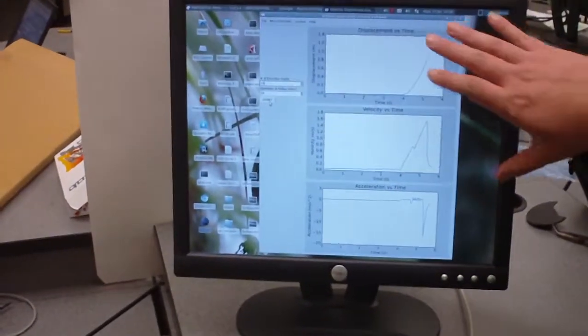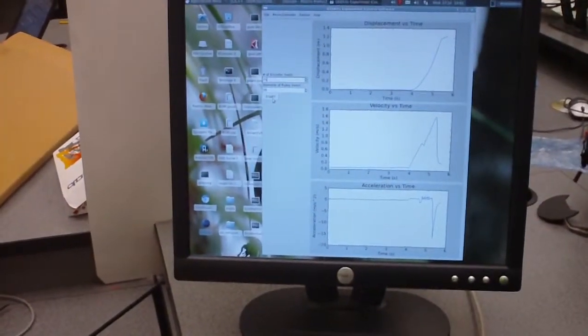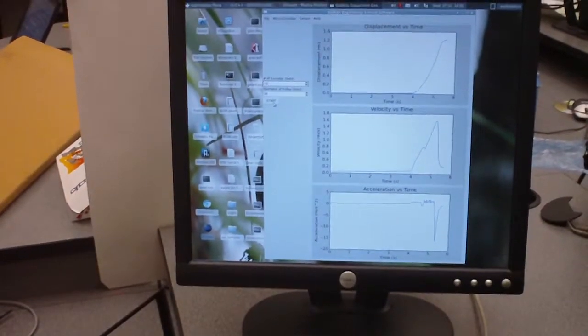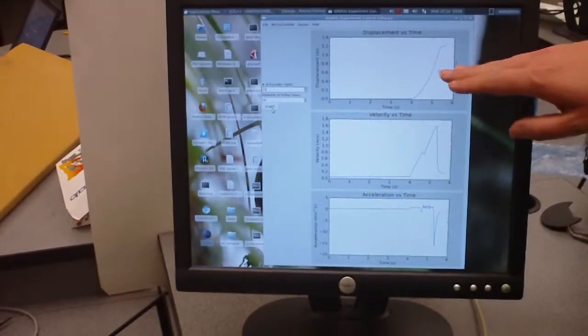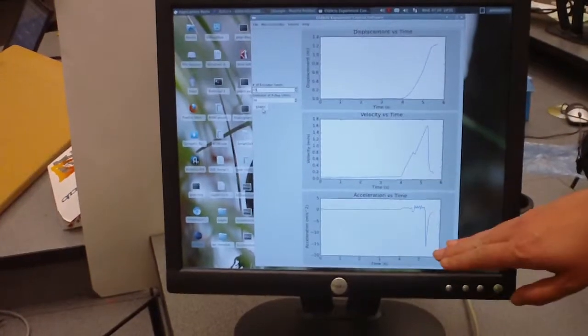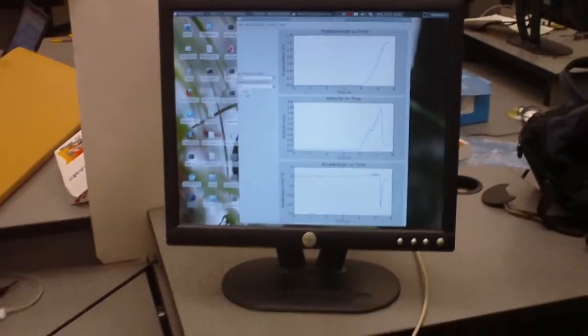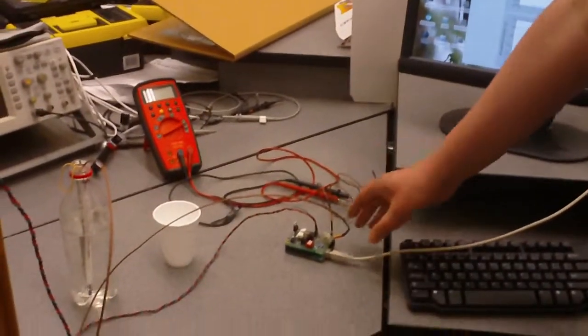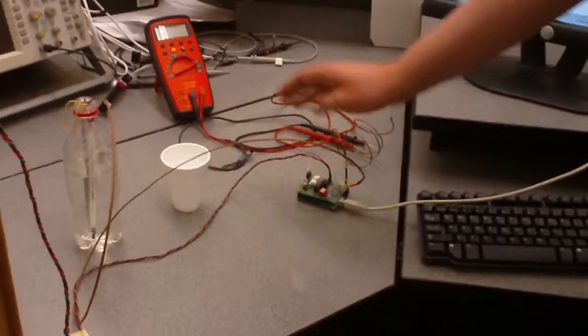What we started with is our OSE KITS experiment control software running in encoder mode. In this mode we're displaying the displacement, velocity and acceleration graphs over time of the experiment as we run it. We're connected to our data acquisition microcontroller which is then connected to our rotary encoder sensor.